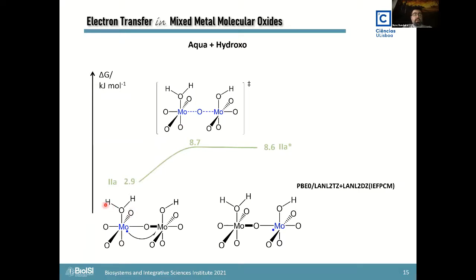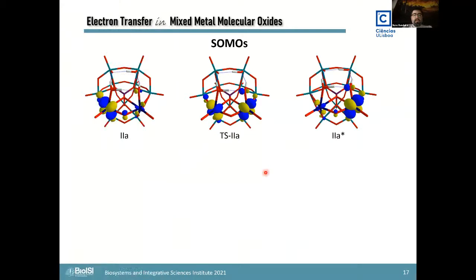With the 2A isomer, what you have is an aqua group here and an hydroxyl group there. So the lowest energy structure is this one where the electron is on the left-hand side and then it moves over to the right-hand side with a very, very subtle transition state right here. And this is the summary of all the curves that I'm presenting here.